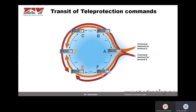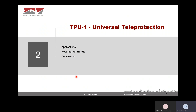Another example shows teleprotection commands transiting through different teleprotection units until they reach the destination. In this particular case, with a ring configuration improving the security and reliability of the system, the commands are also sent through the other direction — through the south. These are the main applications of the teleprotection.